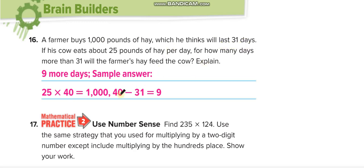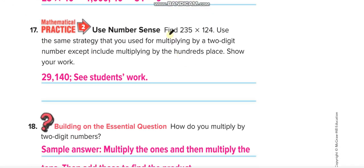The farmer thinks that it will last in 31 days. So how many more days? 40 minus 31, nine more days. Okay. This one now.